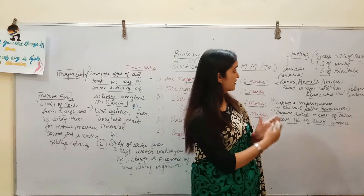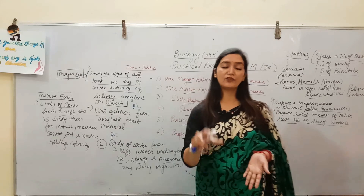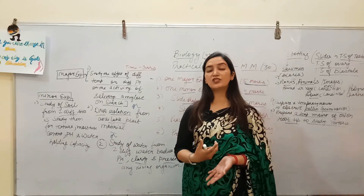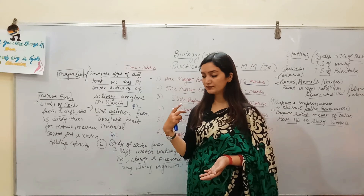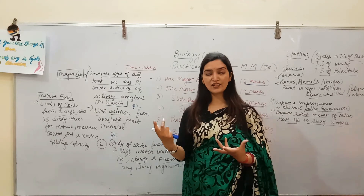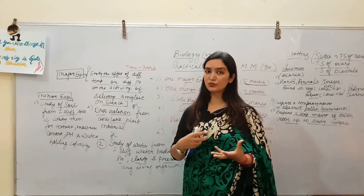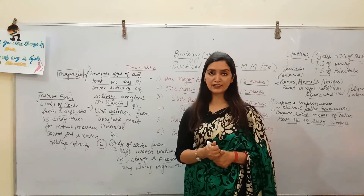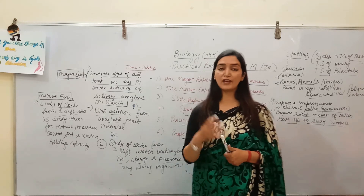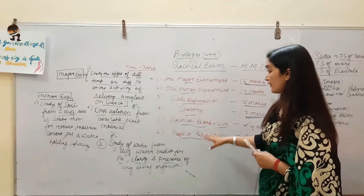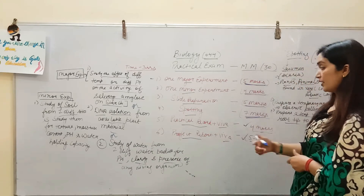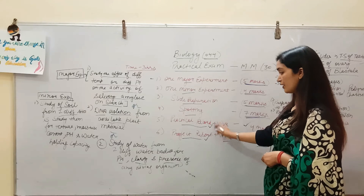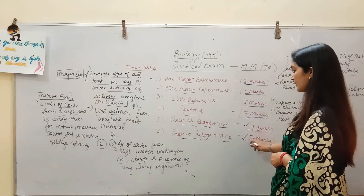Whatever specimens, charts, or models are available in your lab, the teacher can give you any of them to identify. You have to identify everything correctly. Spotting is very important and is worth 7 marks.